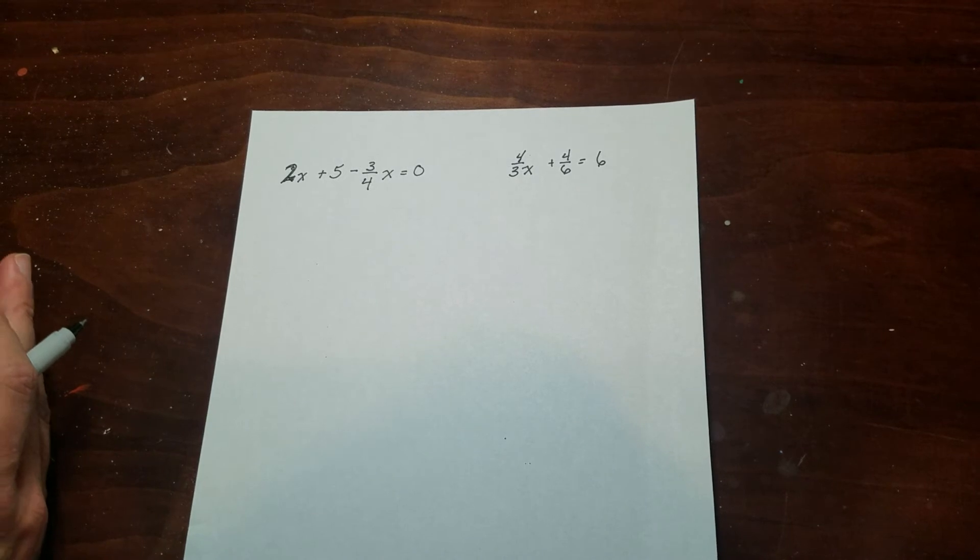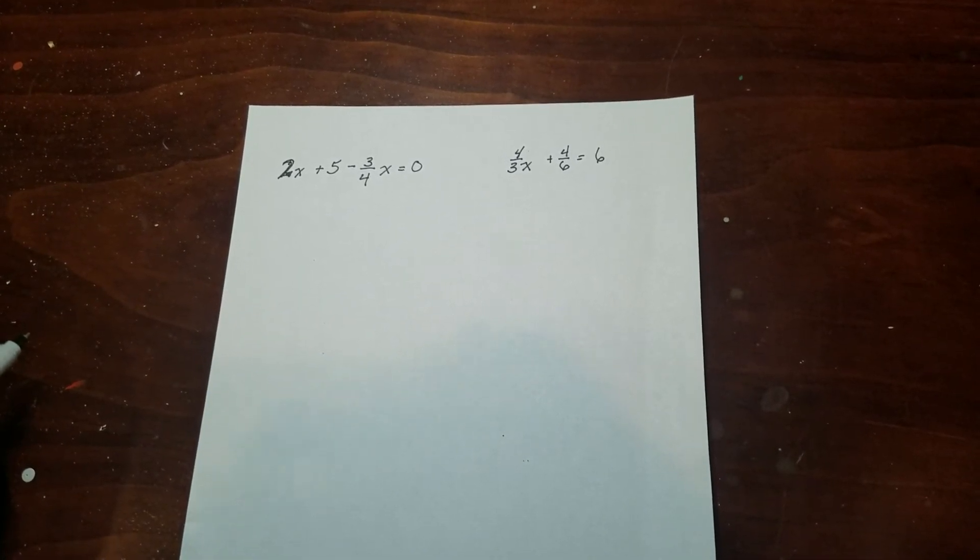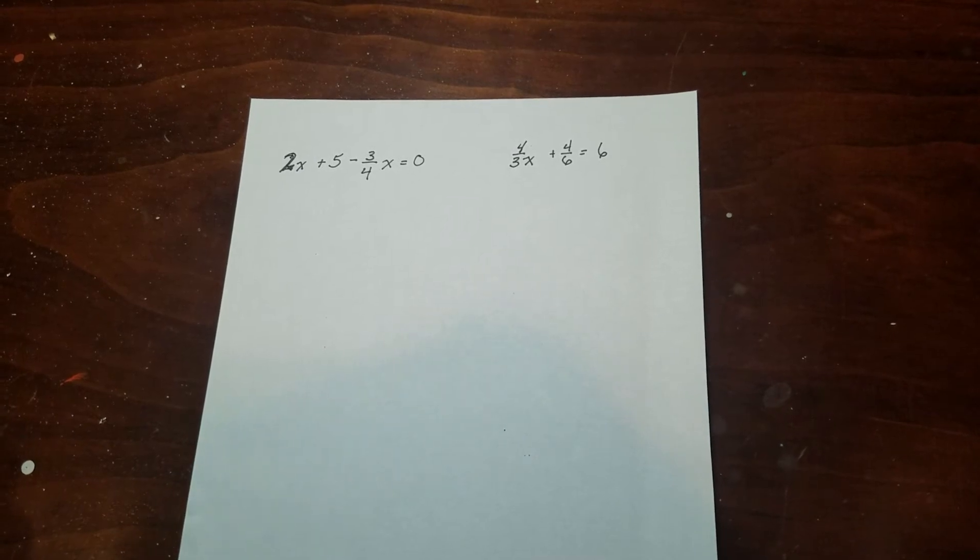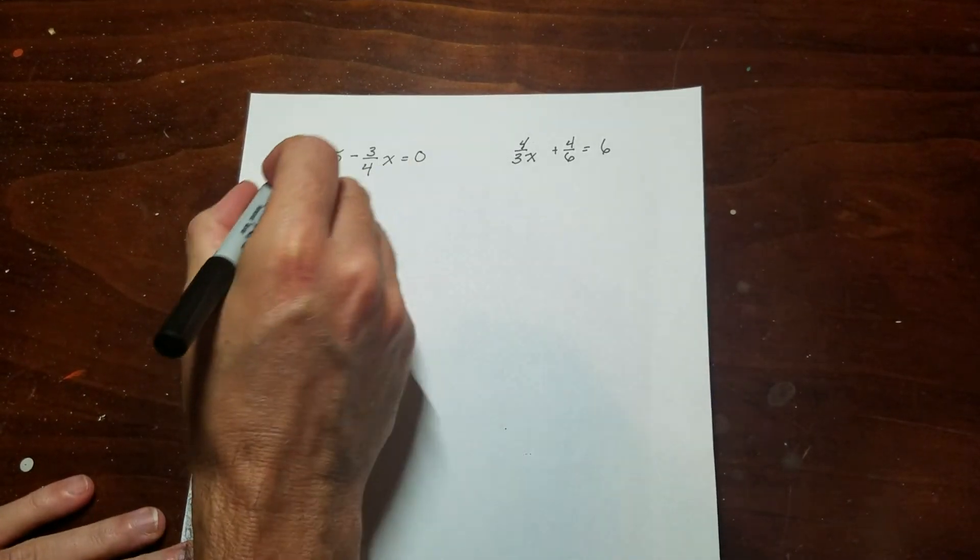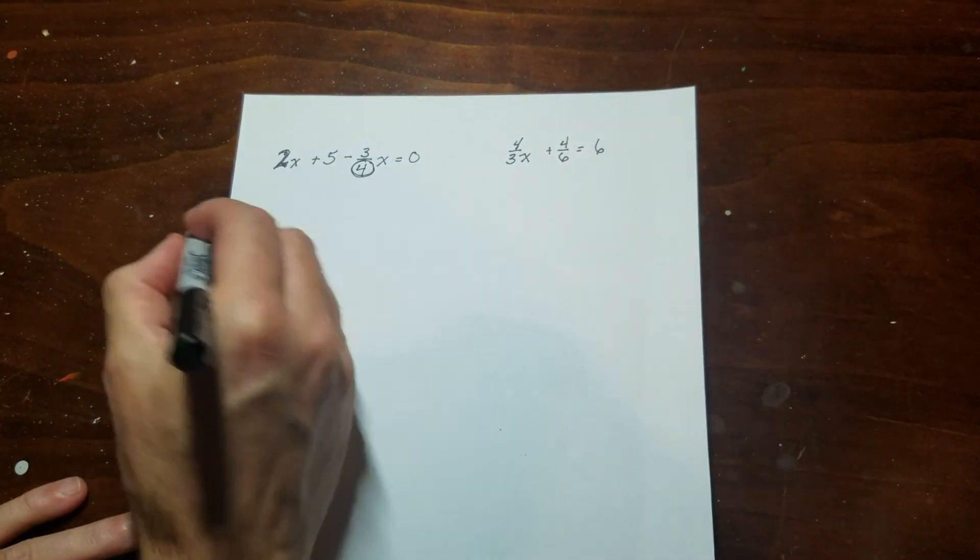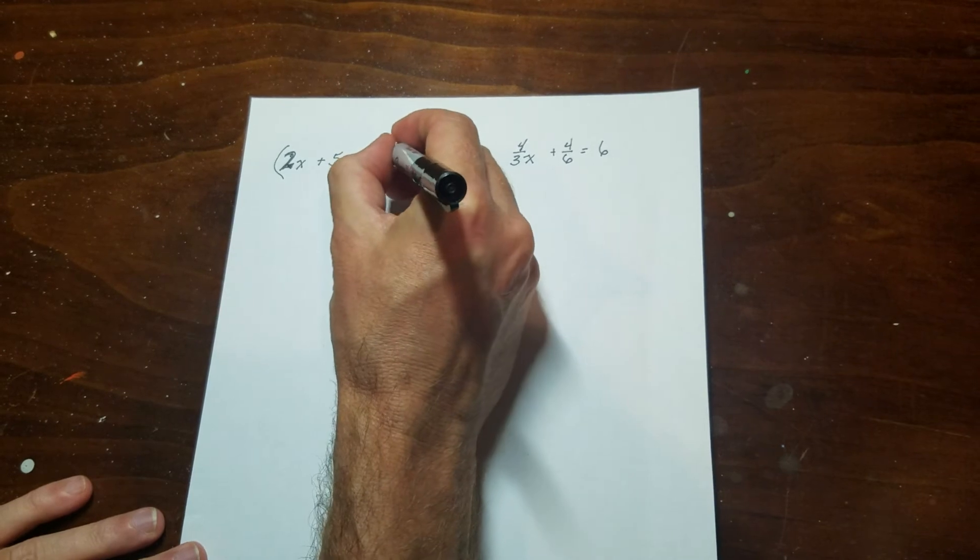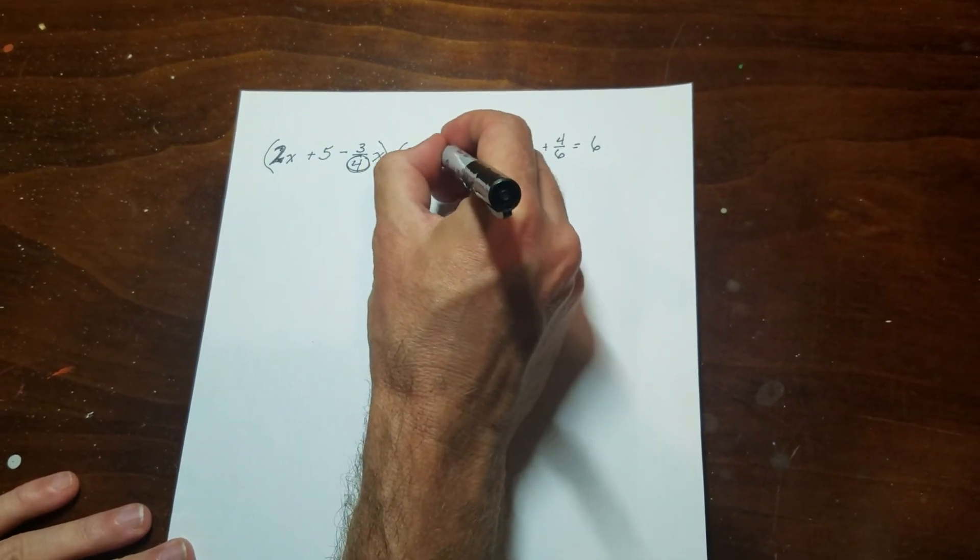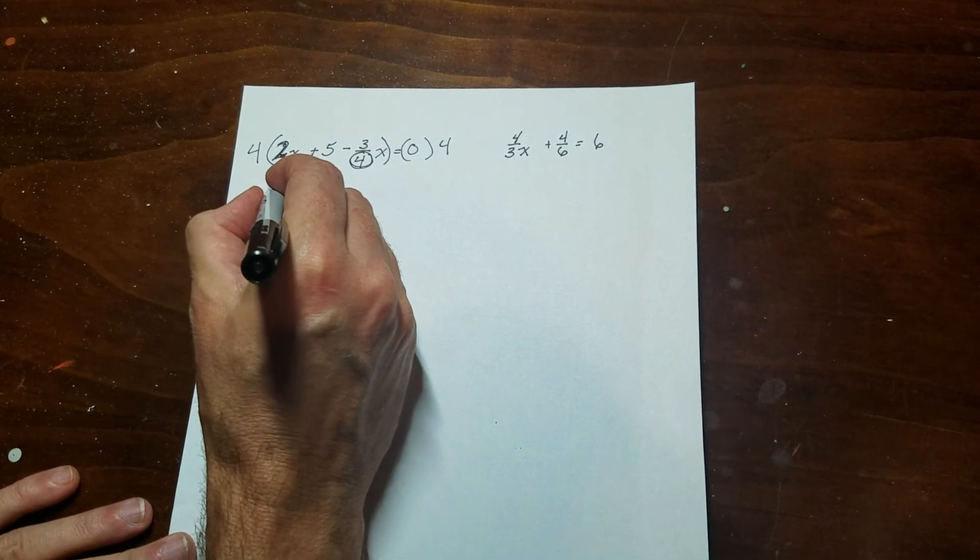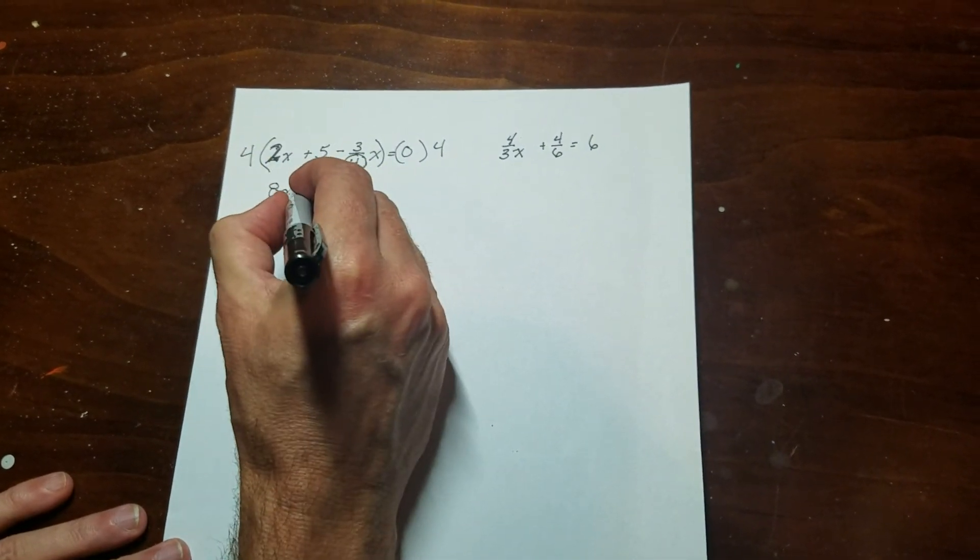You can do this without doing fraction busters. I've seen kids do it. But I personally do not like adding and subtracting fractions. So I try to get rid of them. So what I'm going to do is just look at this whole equation here. I can see I've got this 4 down here. So in a case like this, what I would do is multiply the entire thing by 4. And don't forget to do this on both sides.